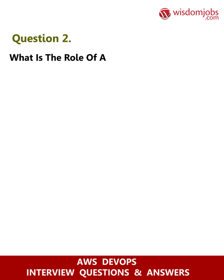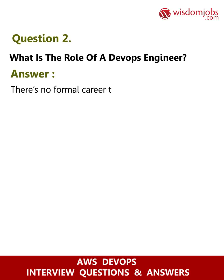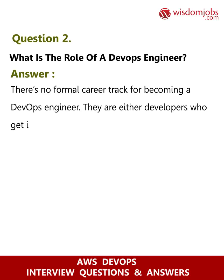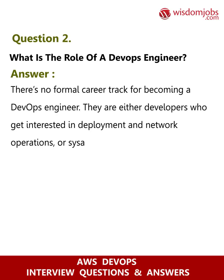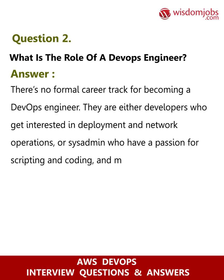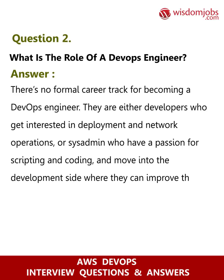Question 2: What is the role of a DevOps engineer? Answer: There's no formal career track for becoming a DevOps engineer. They are either developers who get interested in deployment and network operations, or sysadmins who have a passion for scripting and coding and move into the development side where they can improve the planning of test and deployment.